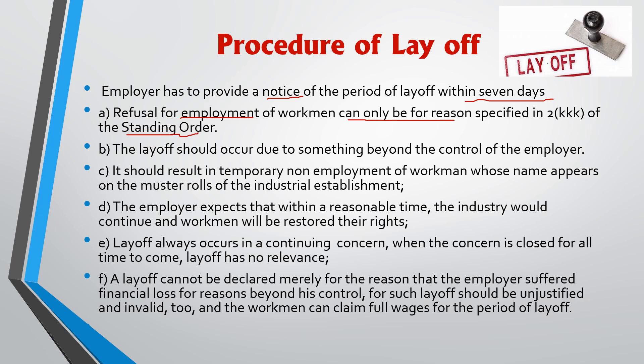The layoff should occur due to something beyond the control of the employer. The employer has to check other options first, and then go for layoff only if it is beyond control. It should result in temporary non-employment of a workman whose name appears on the master role of the industrial establishment. It is temporary — for example, for 6 months if there is no raw material, layoff is given, and after 6 months they can be reappointed. The worker who is given layoff must have his name on the master role.